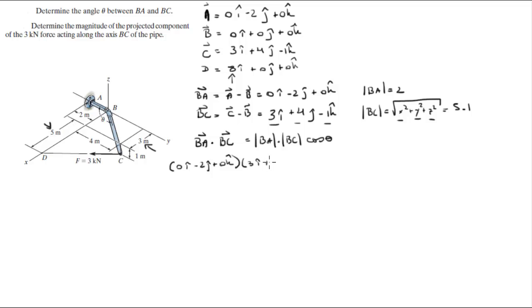So with this formula you substitute the values. The vector BA is 0i minus 2j plus 0k and BC is 3i plus 4j minus 1k. The magnitude of BA is 2 and the magnitude of BC is 5.1 times the cosine of the angle. 0 times 3 is 0, negative 2 times 4 is negative 8, 0 times negative 1 is 0, equals 2 times 5.1 is 10.2 cosine theta.